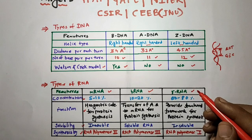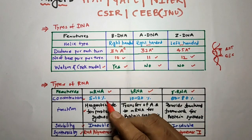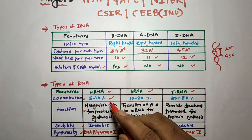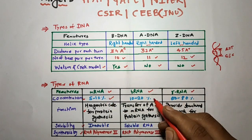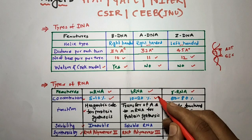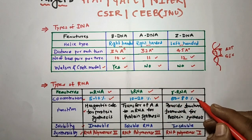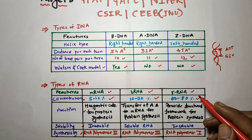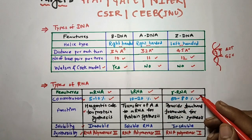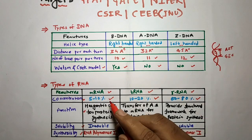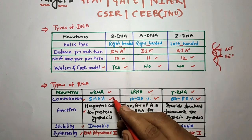The concentration of different types of RNA in the body: mRNA is 5 to 10 percent, tRNA is 10 to 20 percent, and rRNA is 50 to 80 percent.